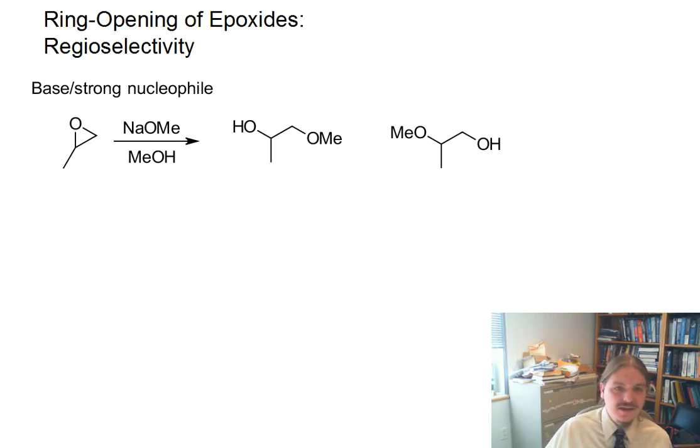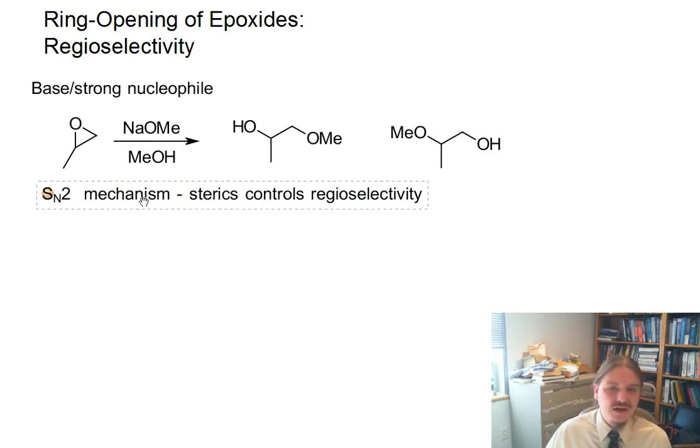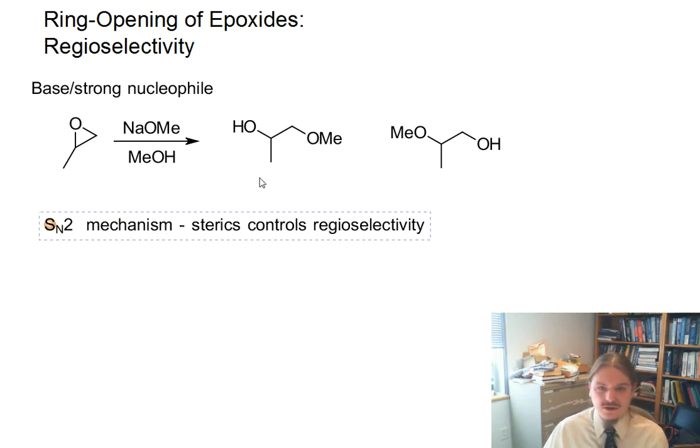And then it turns out, because the mechanism of this reaction is an SN2 mechanism, sterics controls regioselectivity. So that means, in these types of reactions, that our nucleophile is going to preferentially go after the less substituted position over the more substituted position.